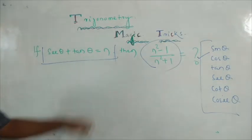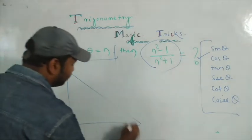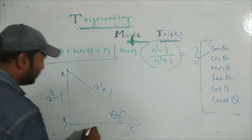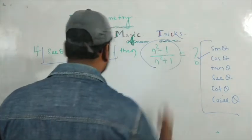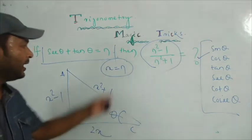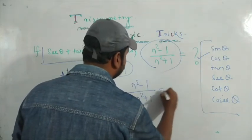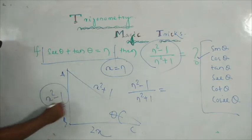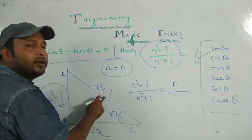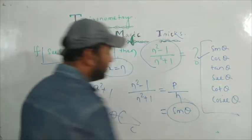If sin θ + tan θ is equal to x, look at the triangle with angle theta. The hypotenuse is x² + 1, the base is x² − 1, and the perpendicular is 2x. We have to evaluate N² − 1 by N² + 1. Here x = N, so N² − 1 equals x² − 1, which is the perpendicular. N² + 1 is the hypotenuse. So N² − 1 by N² + 1 equals perpendicular/hypotenuse = sin θ. Your answer is sin θ — just 10 seconds!